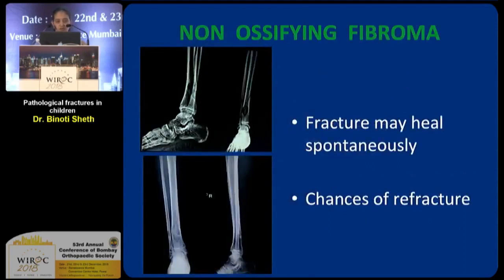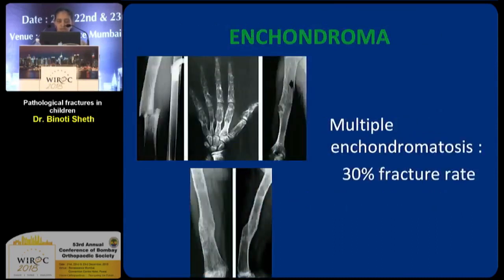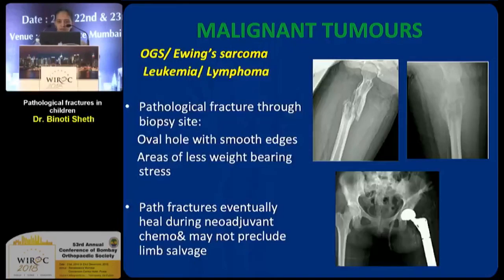Non-ossifying fibroma is again commonly associated with fractures; fractures may heal spontaneously but there are chances of refractures, so you have to splint them and keep them under observation. Enchondromatosis, especially multiple enchondromatosis, has almost a 30% fracture rate. Finally, malignant tumors like osteogenic sarcoma or Ewing sarcoma and some leukemia and lymphoma can also present with pathological fractures, but it is best to refer them to oncosurgeons for proper management.